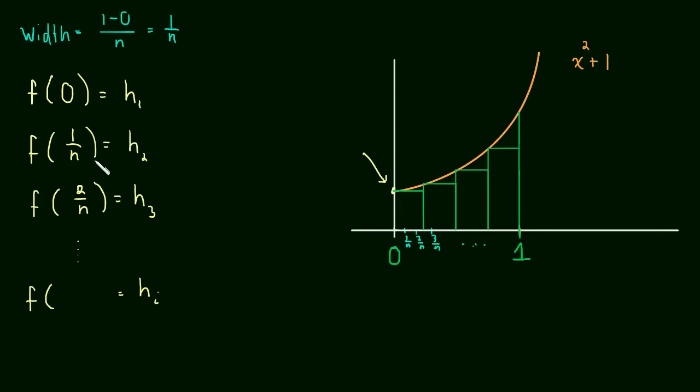Now it looks like we probably have enough to figure out the height of the ith rectangle. So if we wanted the height of the first rectangle, we get 0. But the height of the second rectangle, we get 1 over n. The height of the third rectangle, we get 2 over n. So it looks like it's going to be i minus 1 over n.